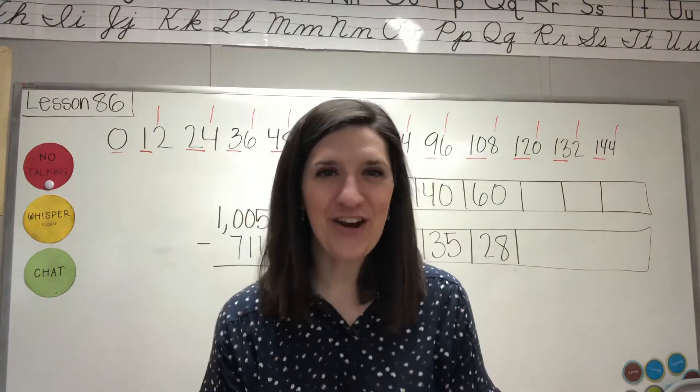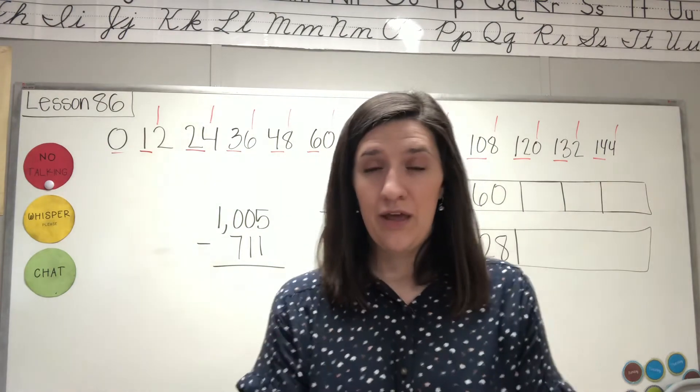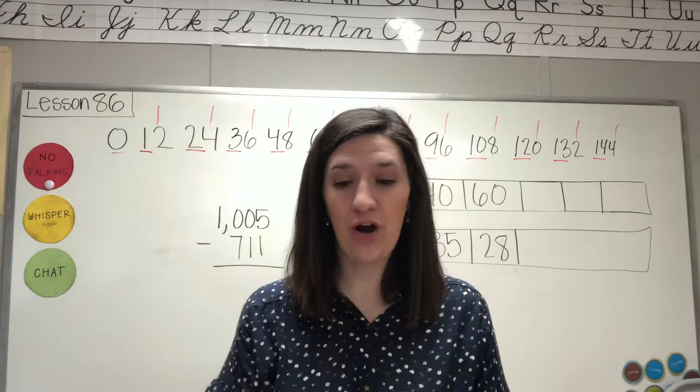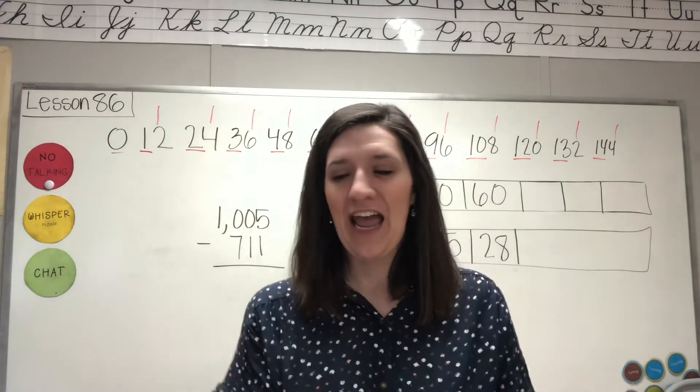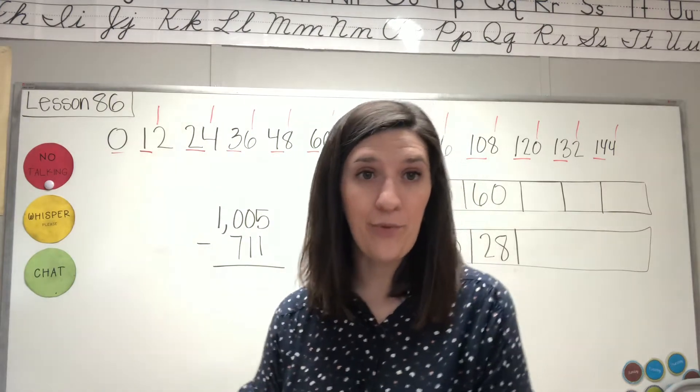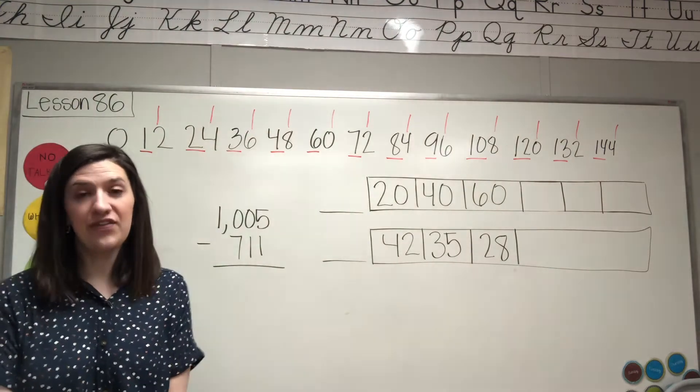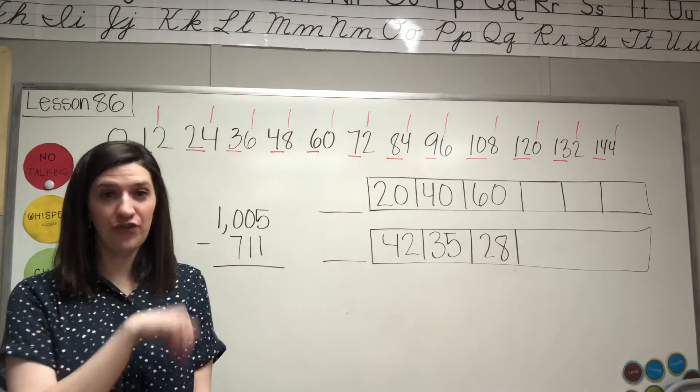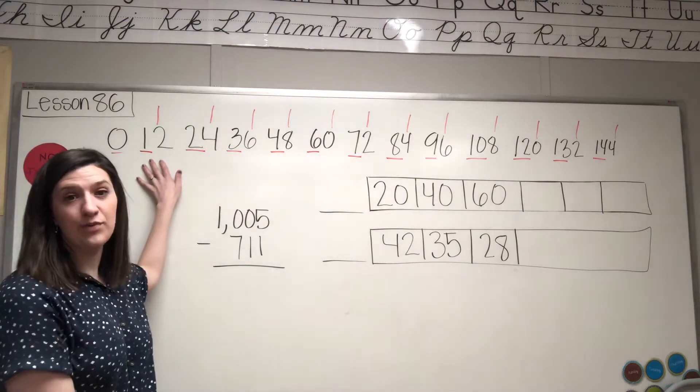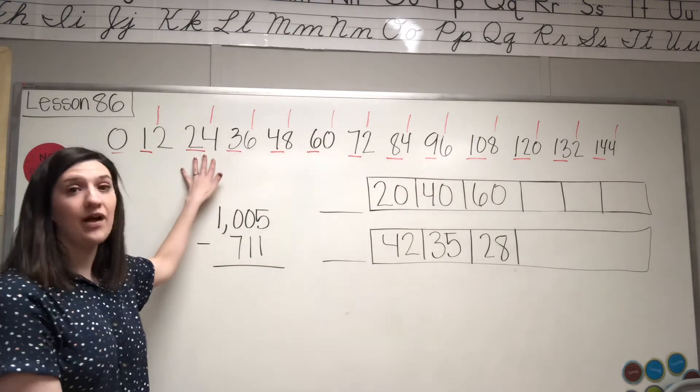Hi second graders, we are about to review things from lesson 86 for your math paper. I have your count by 12s written for you already on the whiteboard. A hot tip for count by 12s is think plus 10 plus 2 more. So 12 plus 10 would be 22, plus 2 more would be 24. 24 plus 10 is 34, plus 2 more is 36, and so on.